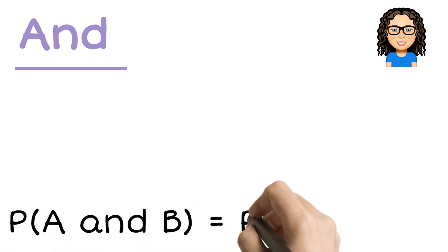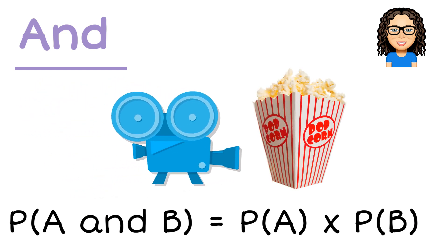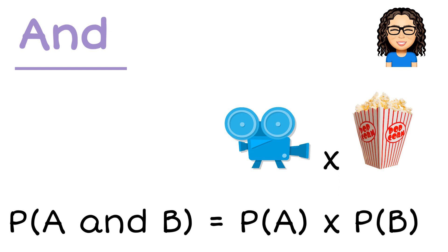The and probability rule. For this rule we want to look at what's the chance of one thing and another happening. So going to the movies and having popcorn. I need both of them to occur, therefore I will multiply.